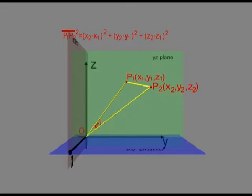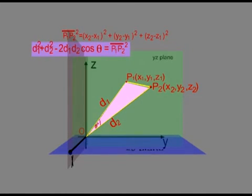The distances from the origin to P1 and P2 are d1 and d2 respectively. By the cosine rule for triangle P1OP2, we can write d1 squared plus d2 squared minus 2d1d2 cos theta equals P1P2 squared.